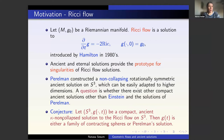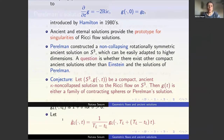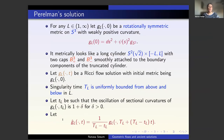Here is the conjecture: if (S^3, g(t)) is a compact ancient kappa-non-collapsed solution to the Ricci flow on S^3, then the only possibilities are the contracting spheres or Perelman's solution. That was our original goal to prove. Let me briefly describe the construction of Perelman's solution, which is very similar to the construction of ancient ovals.